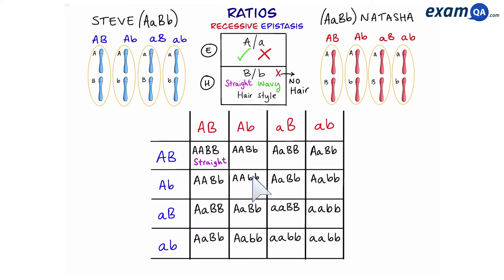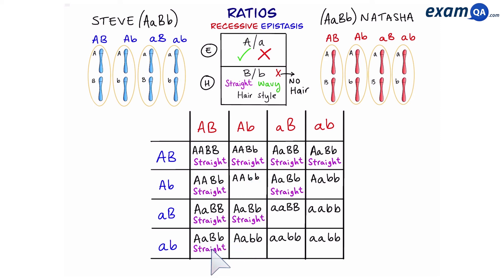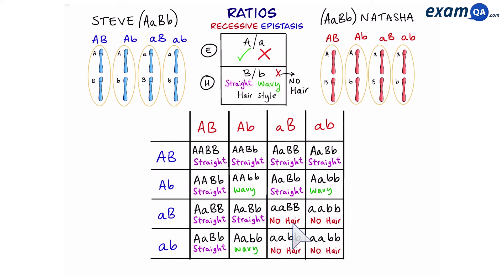Crossing both heterozygous individuals in a Punnett square, we get 16 offspring with the following genotypes. Starting top left: overall dominant on A — go to next gene — next gene overall dominant — straight hair. This one and all of these will also be straight hair. This genotype: overall dominant on A, go to next gene, overall recessive — wavy hair. These two will also be wavy hair. Over here, overall recessive on gene A — neither straight nor wavy hair, so no hair — same with these.